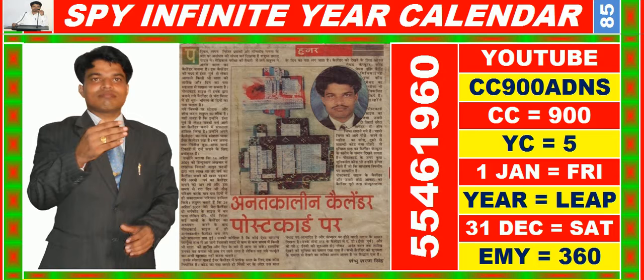In this video you are watching SPY infinite year calendar for the year having calendar code equal to 9-0-0. You may also search it on YouTube by CC900ADNS.